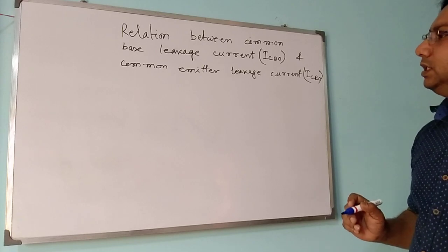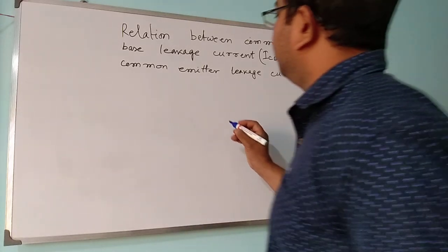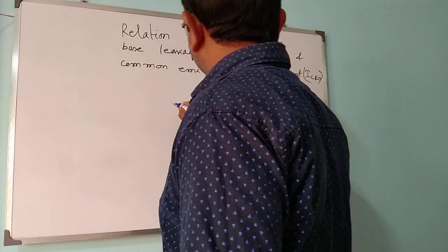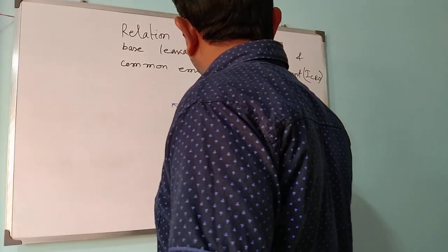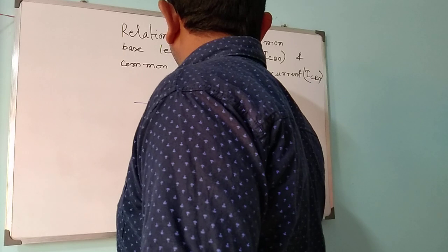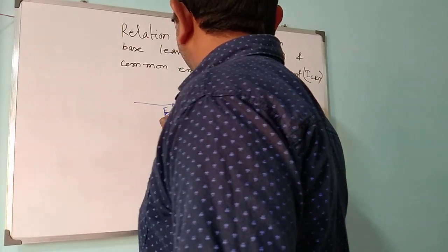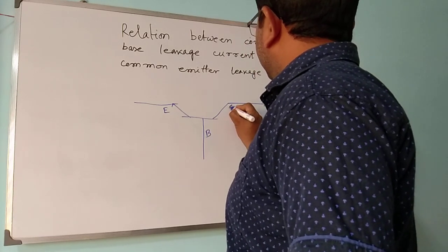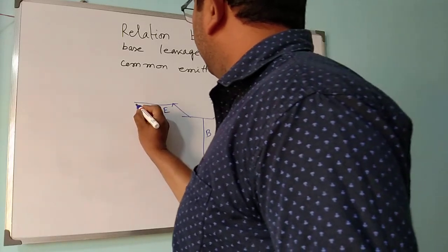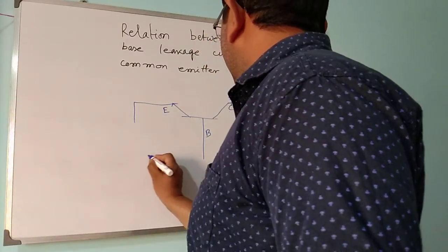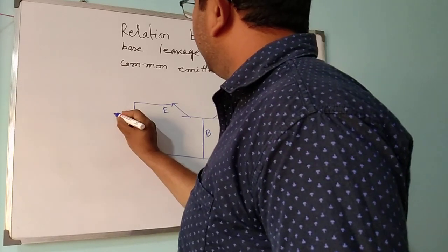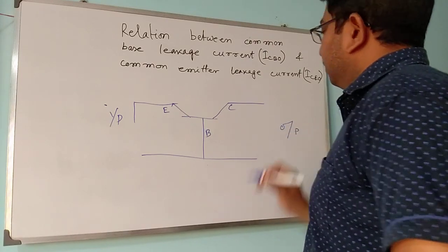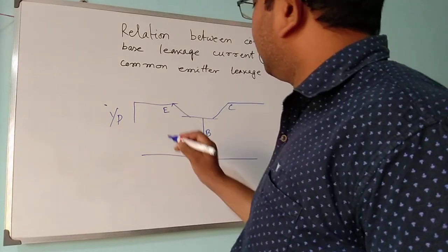Let's first draw the common base configuration. This is our BJT — this is your emitter terminal, this is your base terminal, this is your collector terminal. Our base is common to input and output, so this is your input and here we are getting the output. Now base-emitter is in forward bias.